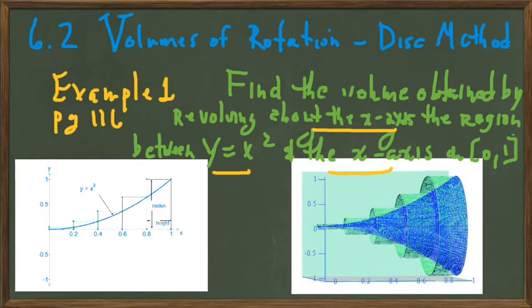Here is the curve y equals x squared on the interval 0, 1, and we are revolving it about the x-axis. The method we're going to use is going to look similar to the upper rectangle method.